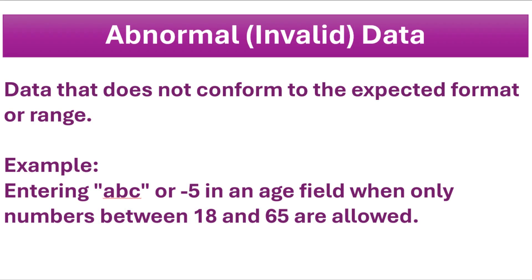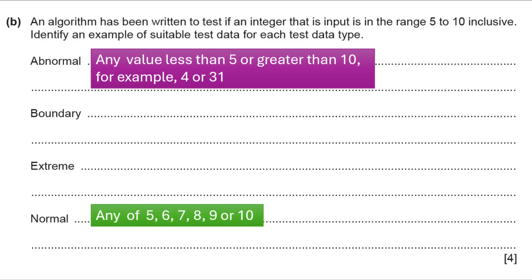Now, abnormal or invalid data — data that does not conform to the expected format or range. For example, entering 'abc' or minus 5 in an age field when only numbers between 18 and 65 are allowed would be abnormal data. For this question, any value out of the range 5 to 10 will be the abnormal test data — it can be any value less than 5 or greater than 10, for example 4 or 31.